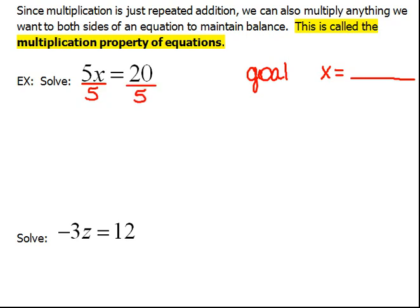Now, I know you're probably asking yourself, wait a minute, this property said the multiplication property of equations, not the division property. But multiplying by 1 fifth is the exact same thing as dividing by 5. So technically, we are multiplying, but we think of it as division.